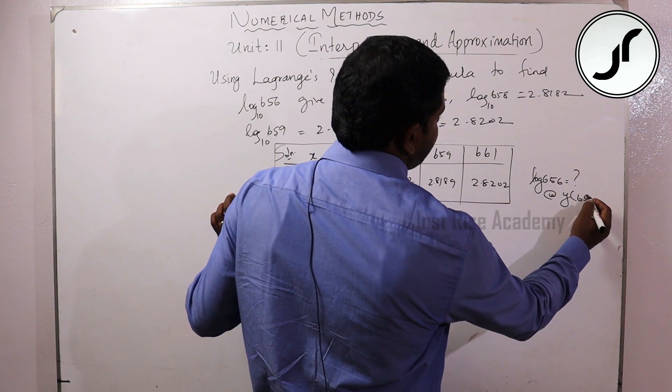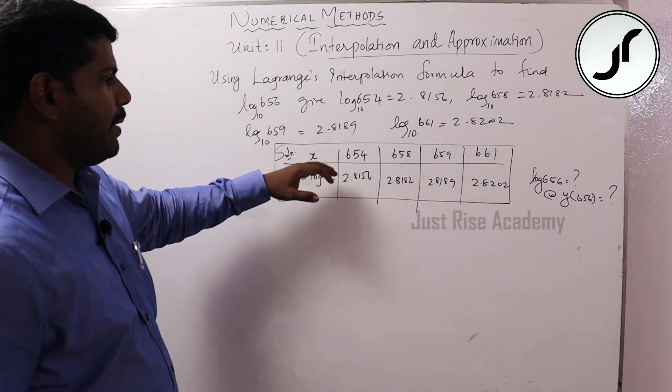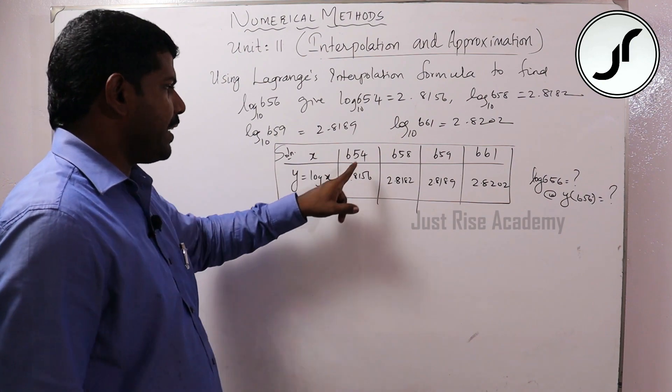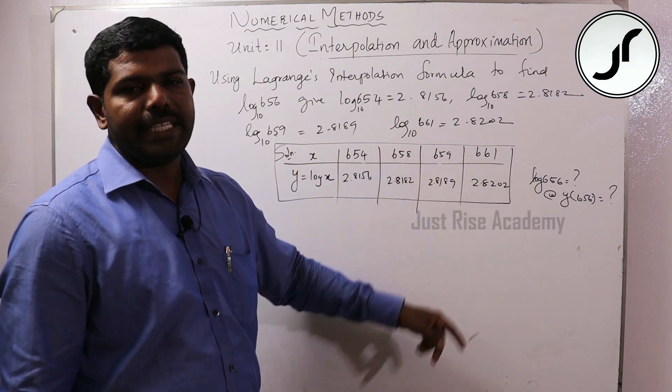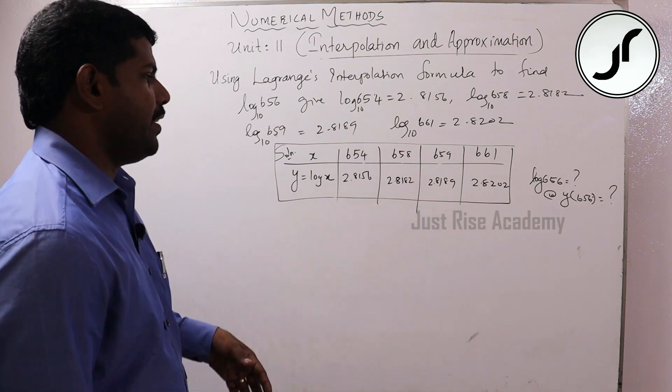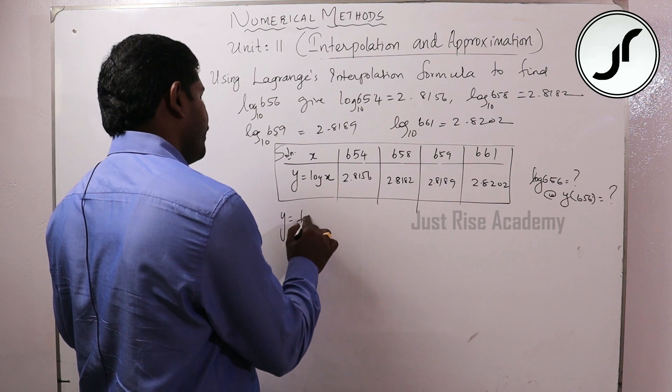Y of 656 equals n of d. So in the problem, x values: x naught, x1, x2, x3. Y values: y naught, y1, y2, y3. So Lagrange's interpolation formula: y equals f of x.